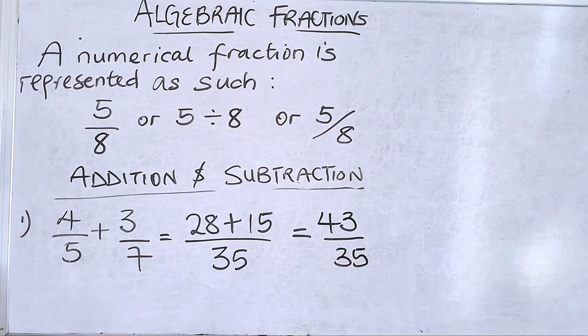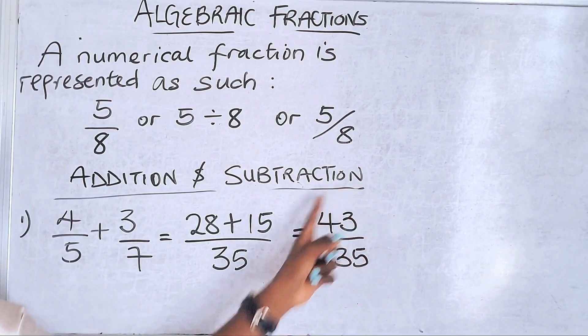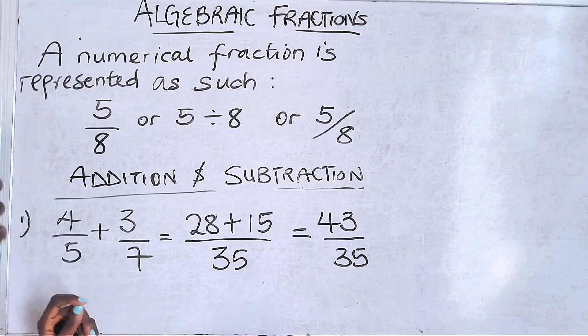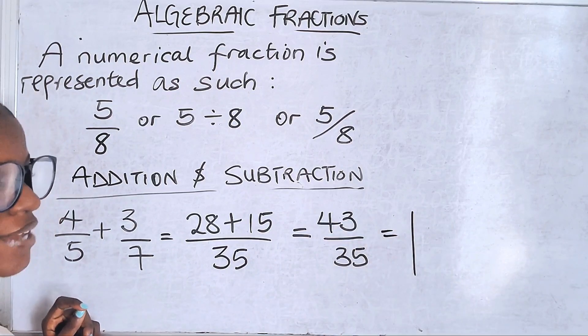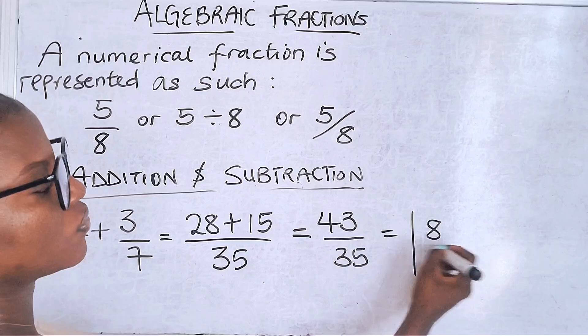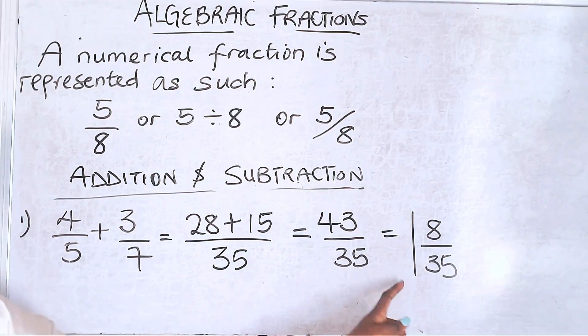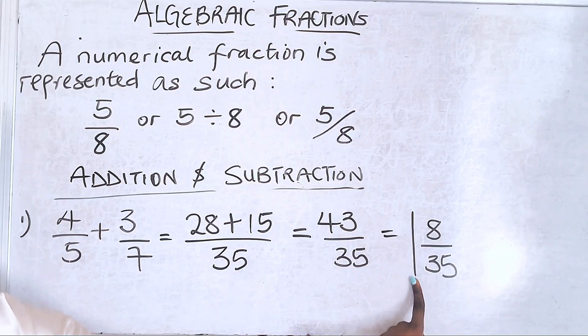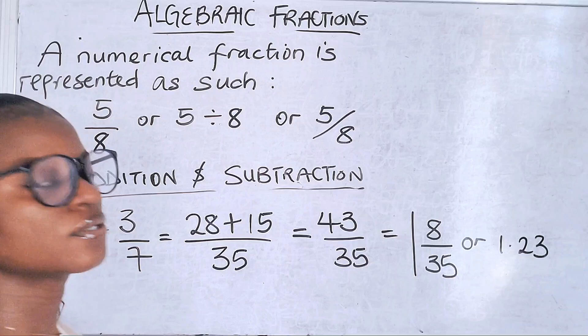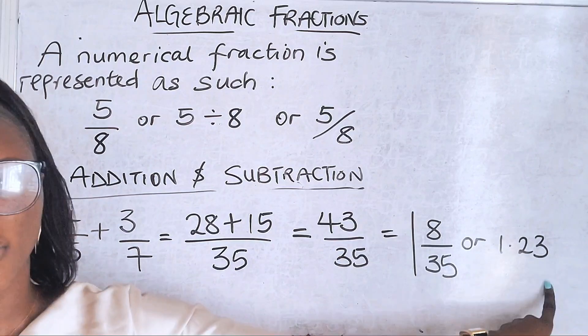43 over 35. This is an improper fraction. If you have an objective question with this as an option, you can pick it. But if not, change this improper fraction to a mixed fraction or decimal. How many times can 35 go in 43? One time, with remainder 8. So it's 1 and 8 over 35. This is a mixed fraction, where you have a whole number with an improper fraction. You can either have this or the decimal form, which is 1.23. This is how you add fractions.